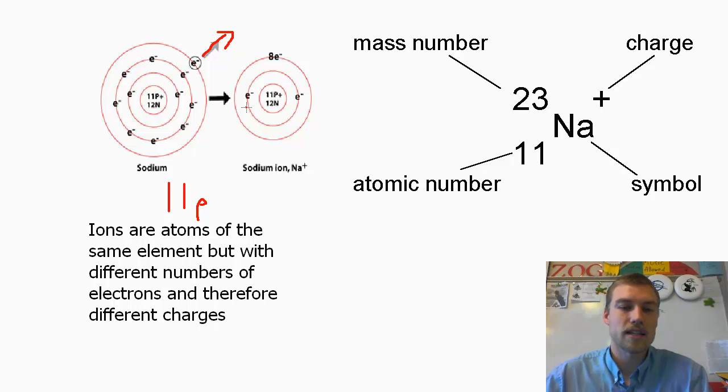So now we have 11 protons, and having subtracted an electron, we now have 10 electrons.